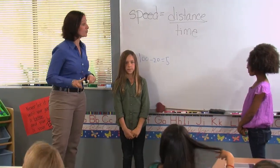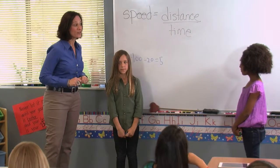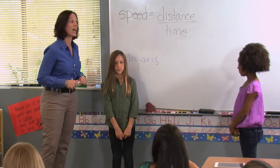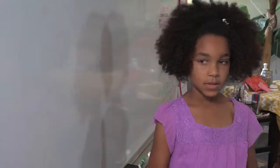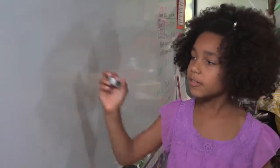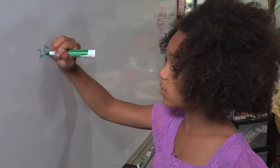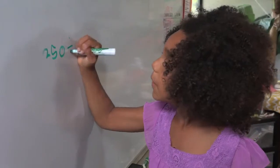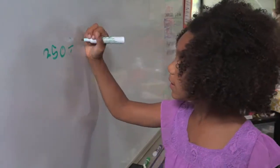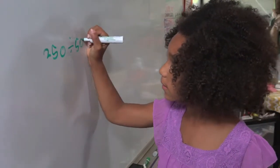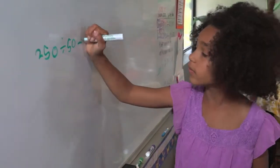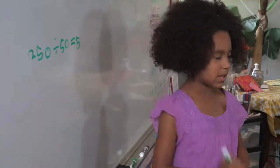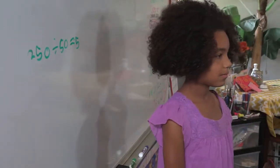Bella, the second runner ran 250 meters in 50 seconds. I would divide 250 meters by 50 seconds. The second runner's speed is 5 meters per second. Very good.